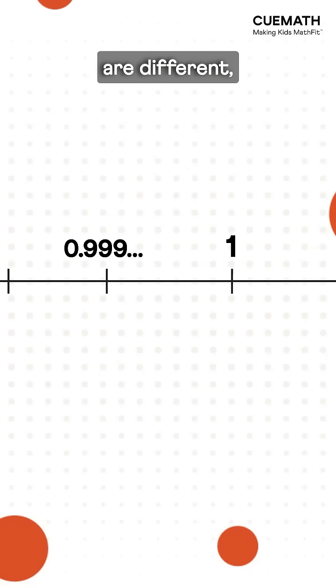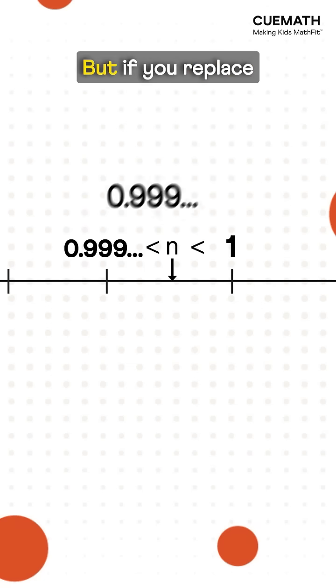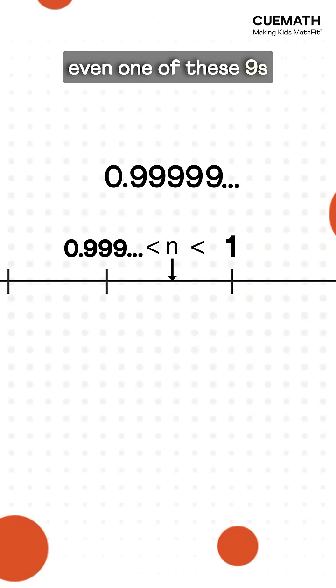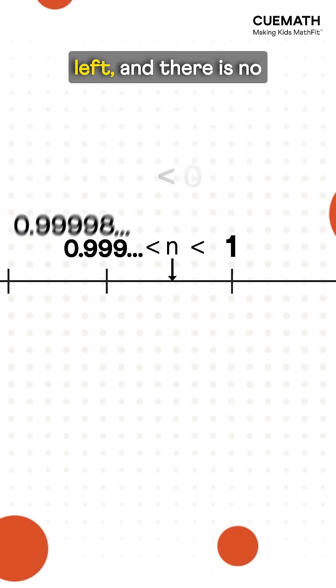If these two numbers are different there must be a number between them that is bigger than 0.9 repeating and smaller than 1. But if you replace even one of these 9s with another digit the number instantly becomes smaller and will lie to the left.